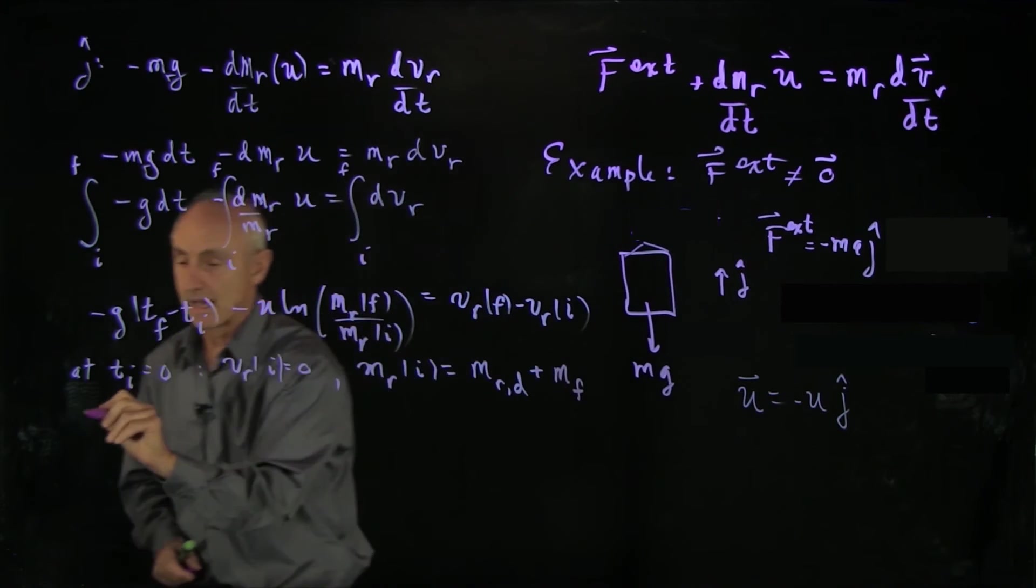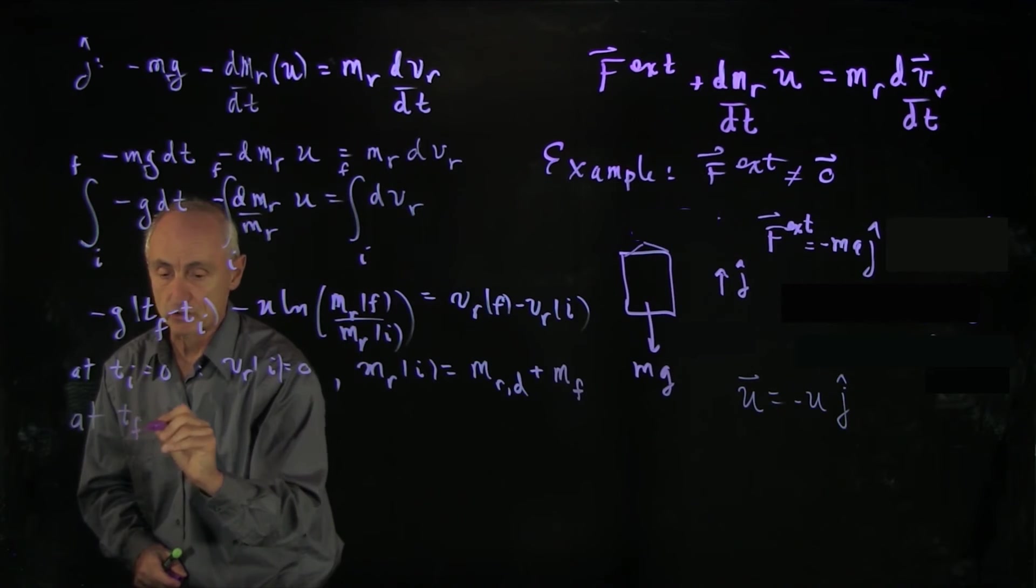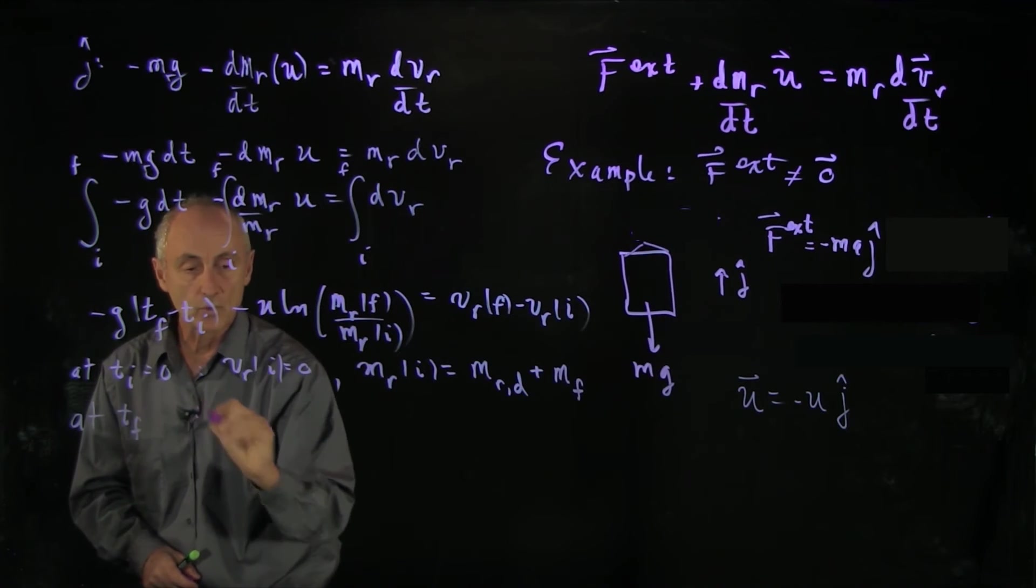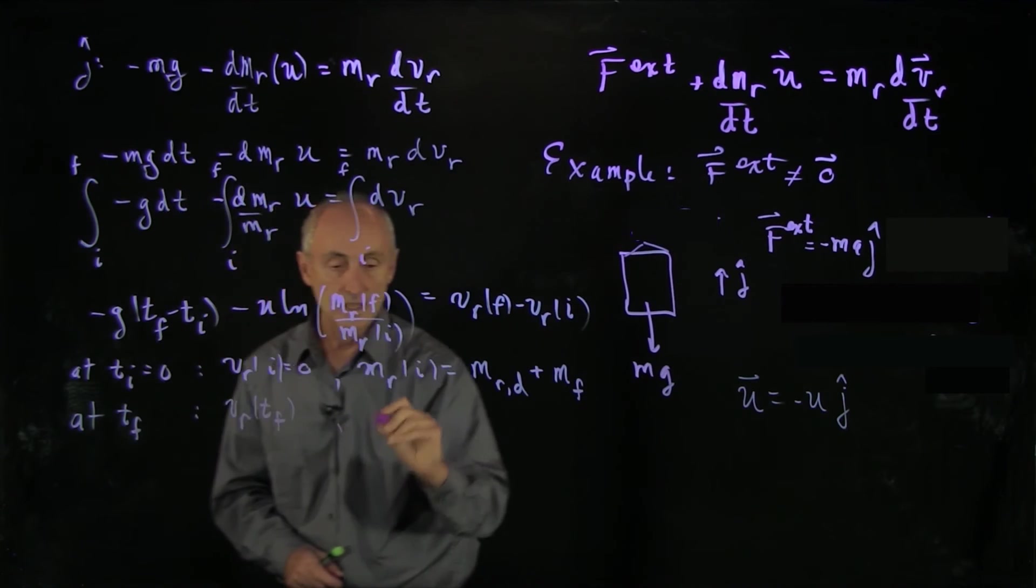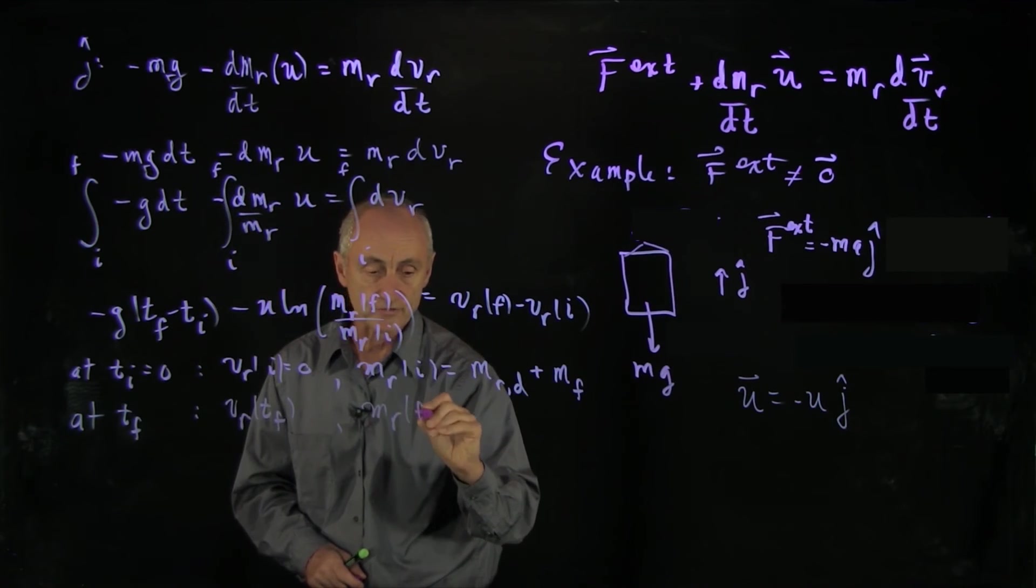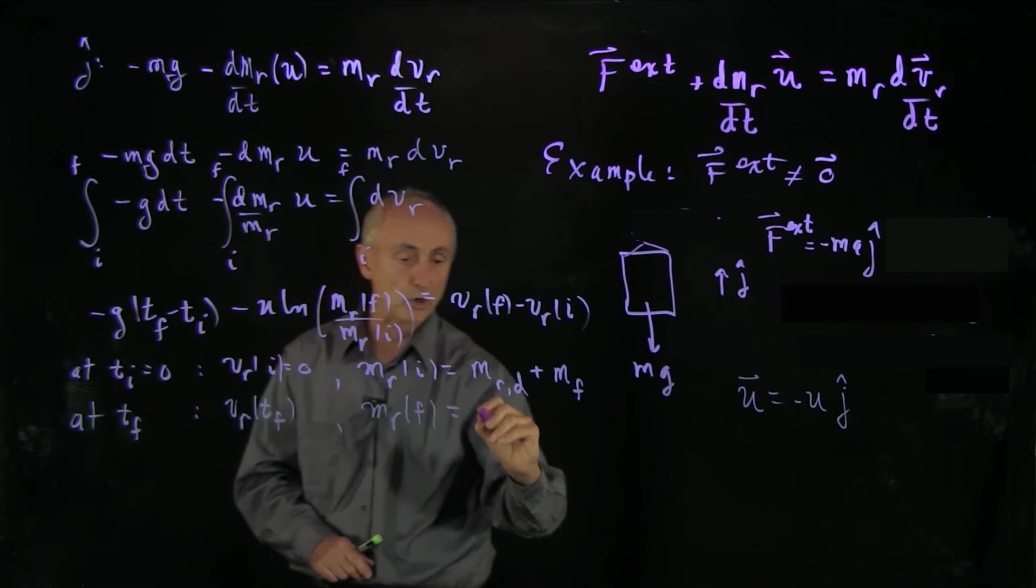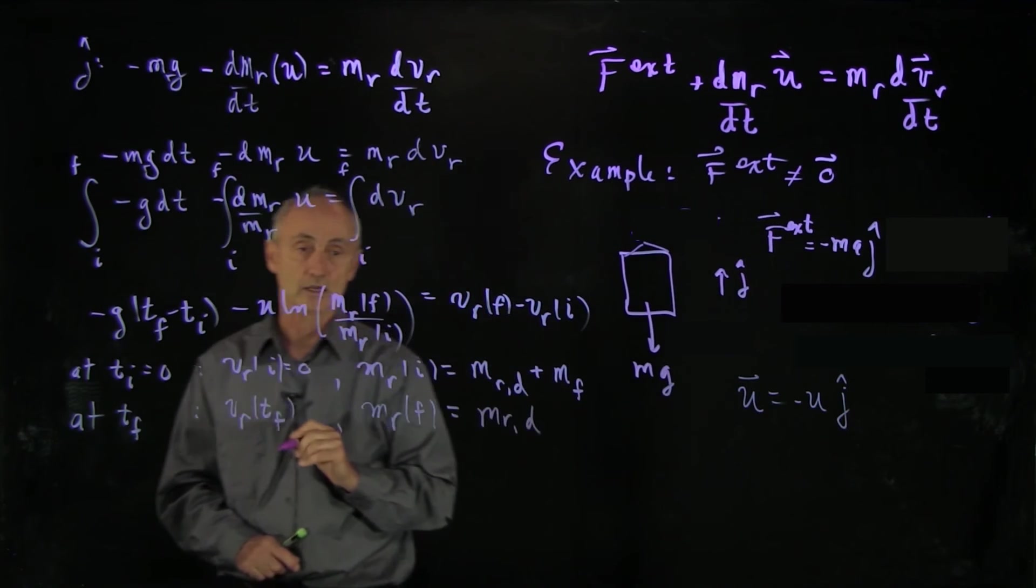And the final at t final, when the engine turns off, we're going to try to find this velocity at t final. And our condition for the final mass is all the fuel's been burned, and so this is just the dry mass of the rocket.